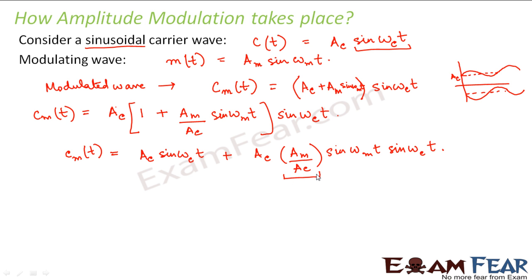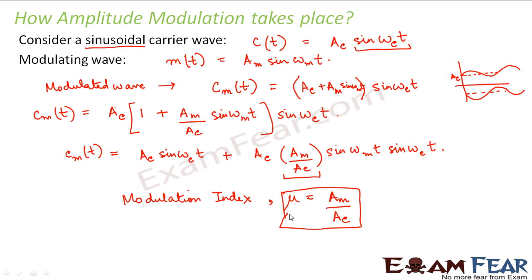Here we have the ratio AM by AC. We will introduce a new term called modulation index. The modulation index is the ratio of the amplitude of the message signal to the amplitude of the carrier wave. This ratio tells us how much modulation will actually take place, because in amplitude modulation, modulation happens on the amplitude. This is denoted by mu. So we can replace AM by AC with mu.